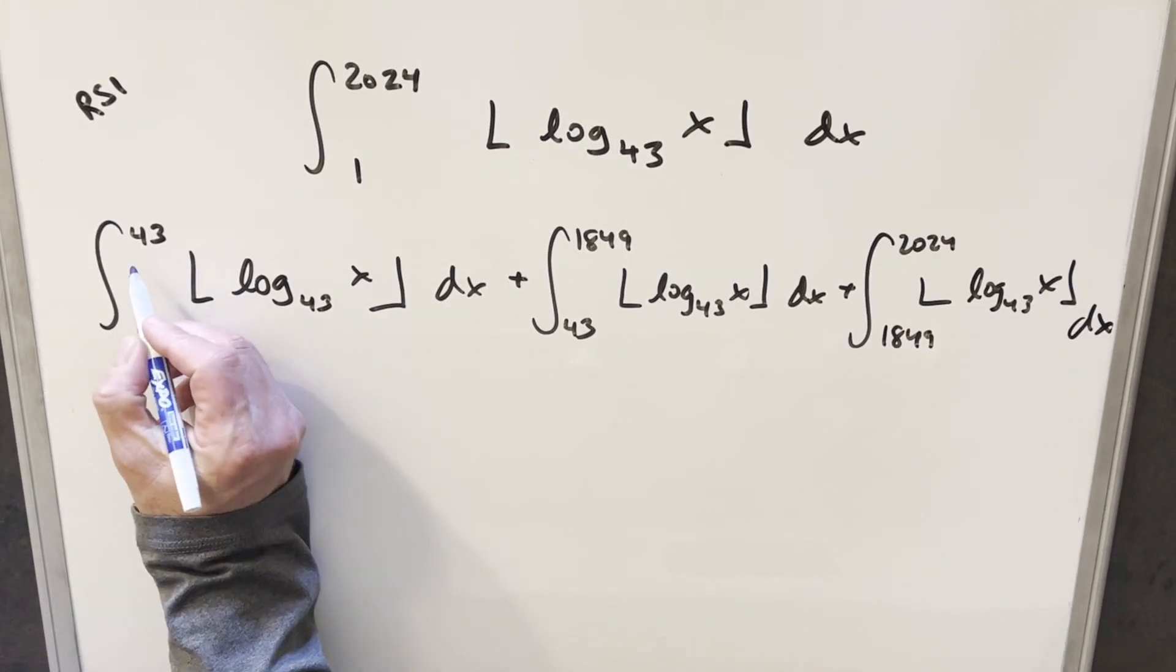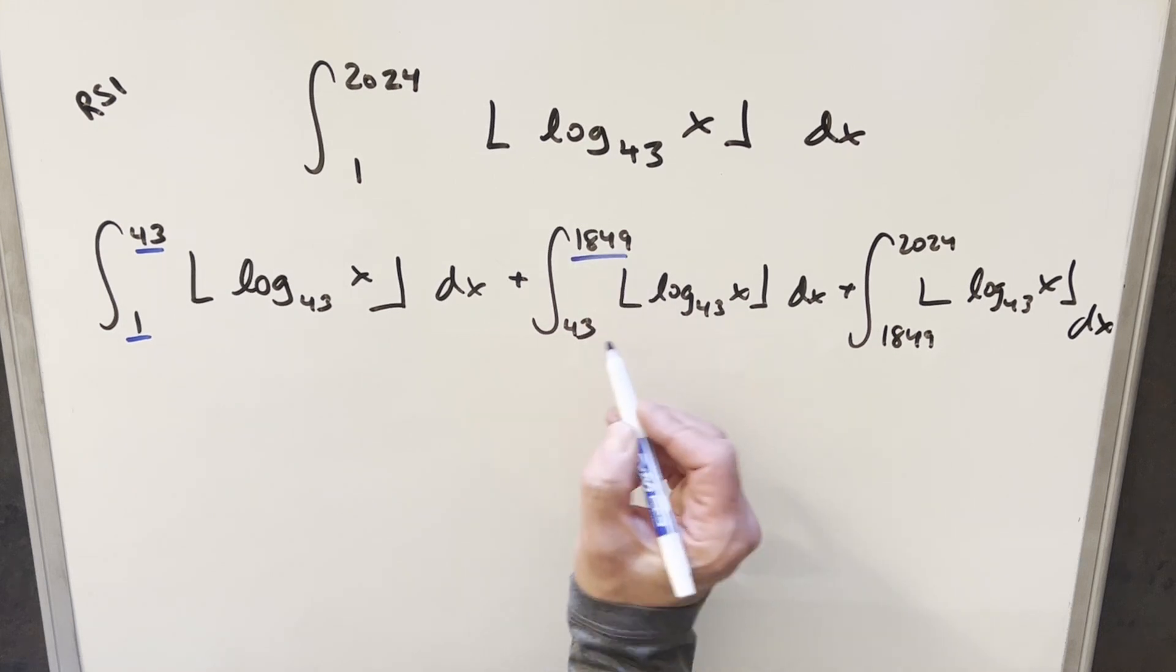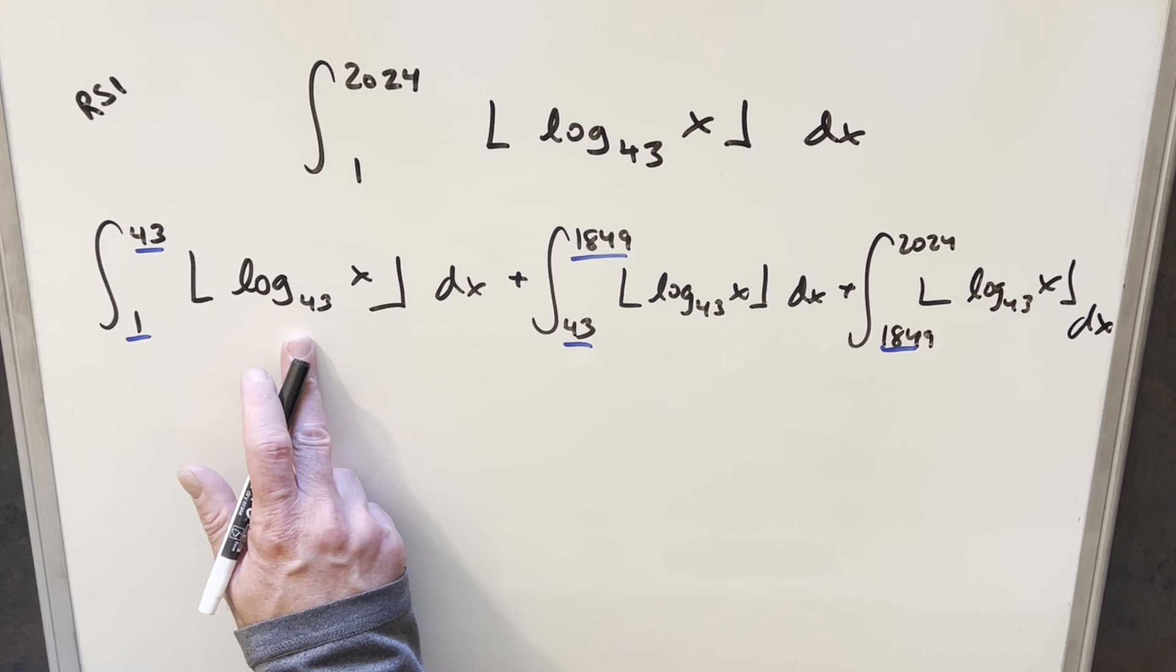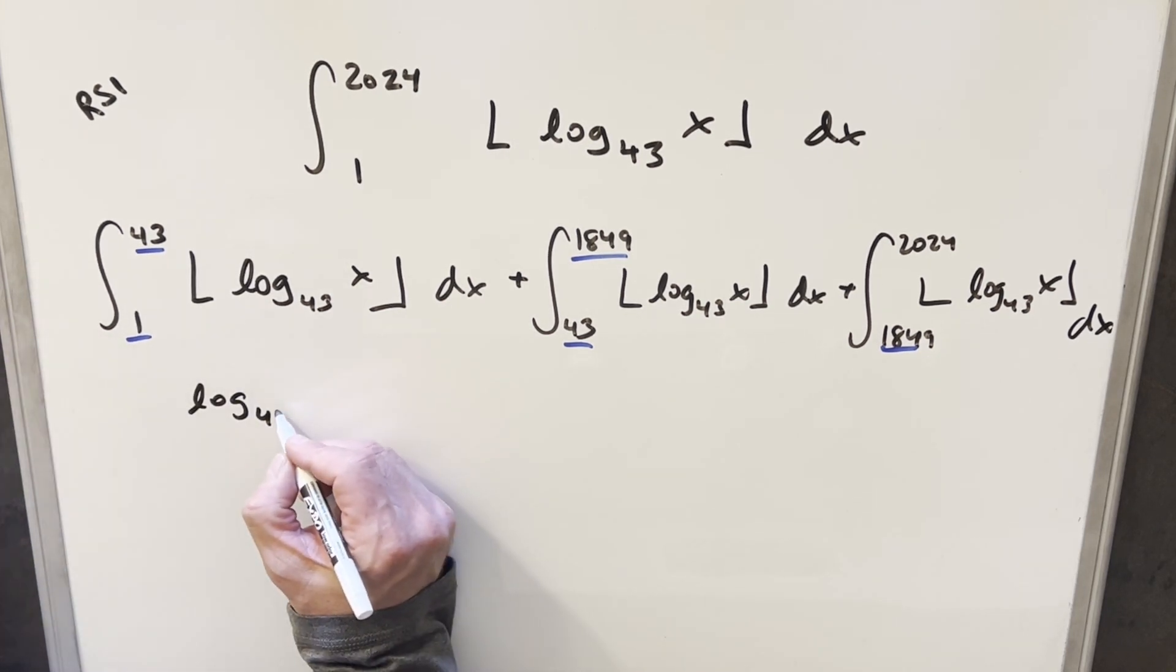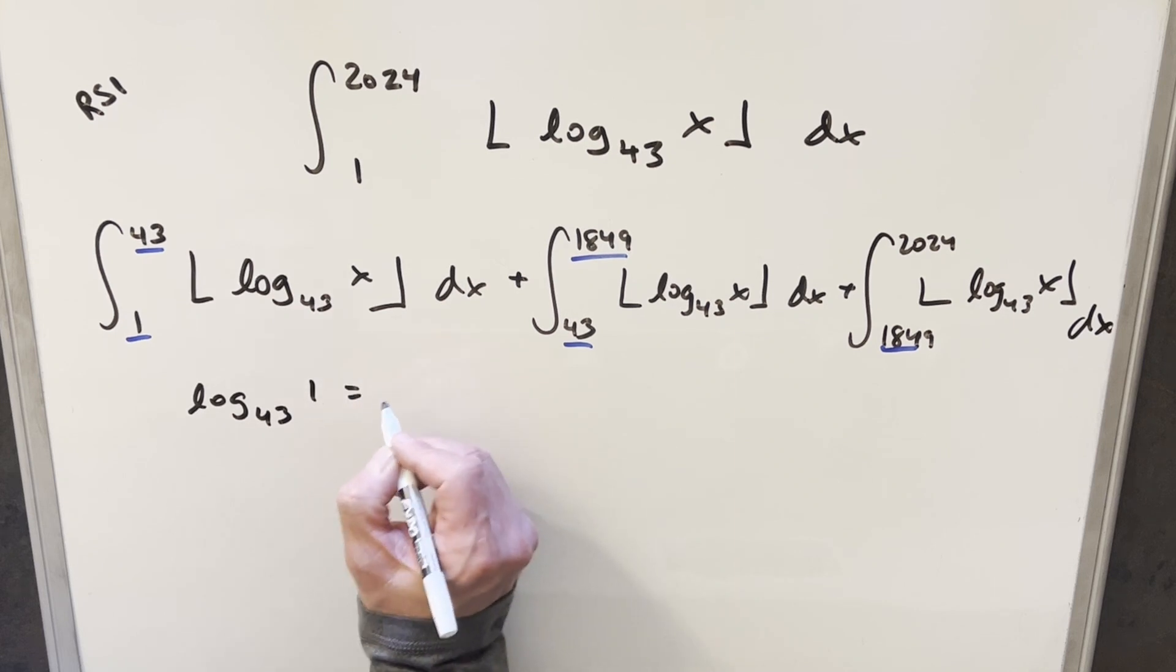Okay, so now that I have this broken up on those points that we found on the previous board, right? Now doing it this way, each of these integrals is going to simplify to just a numeric value. Just basically doing what we just did. At this x value, log 43 of 1, that's 0.